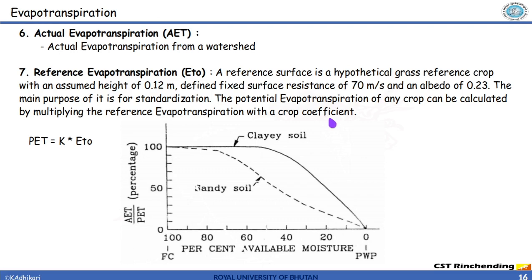The potential evapotranspiration of any crop can be calculated by multiplying the reference evapotranspiration with a crop coefficient like I explained. If we need to find the potential evapotranspiration for a rice crop we simply multiply the reference evapotranspiration times the crop coefficient. This crop coefficient has to be experimentally computed.